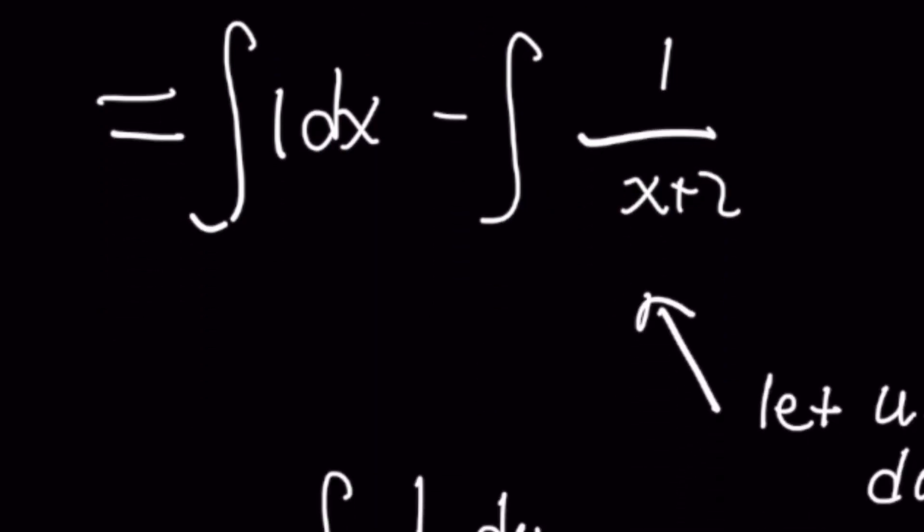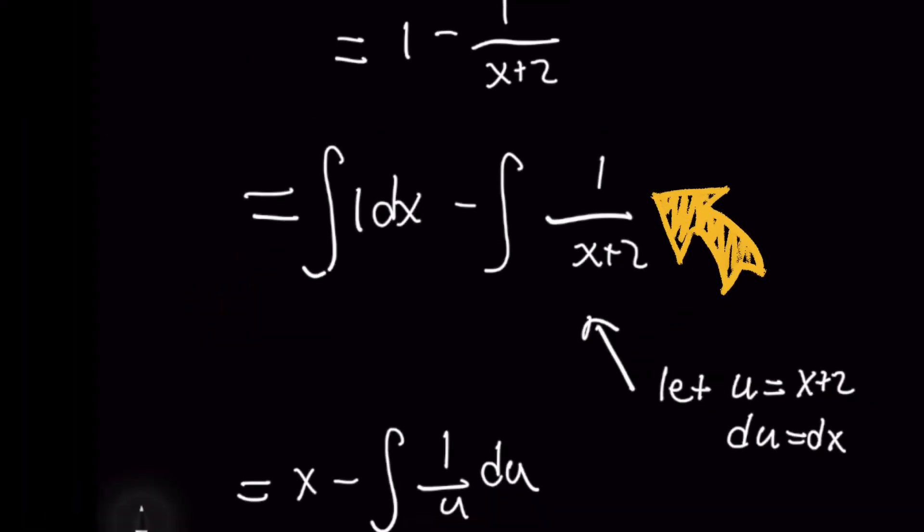So the first one will be integral of 1 dx which will give you x. And then for the second one this looks a lot like a 1 over x integral that gives you the natural log of the absolute value of x. But keep in mind here that we need to do a u substitution first because the denominator has this plus 2 part.